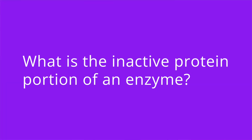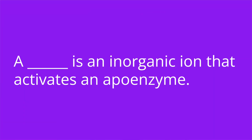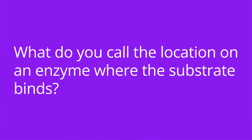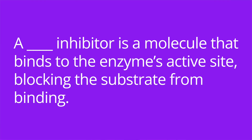It's quiz time and I have four questions for you. Question one: what is the inactive protein portion of an enzyme? The answer is apoenzyme. Question two: a blank is an inorganic ion that activates an apoenzyme. The answer is cofactor. Question three: what do you call the location on an enzyme where the substrate binds? The answer is the active site. Question four: a blank inhibitor is a molecule that binds to the enzyme's active site, blocking the substrate from binding. The answer is competitive.